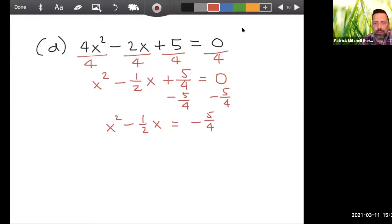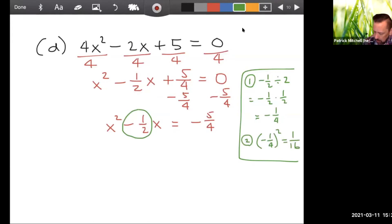So now we have x squared minus 1 half x equals negative 5 fourths. We are ready for the magic trick. The number attached to the x is a negative 1 half. Let's see. Step 1, negative 1 half divided by 2. Remember dividing by 2 is the same thing as multiplying by 1 half. So that would give us negative 1 fourth. And then what do we do in step 2? We square the answer to step 1. The magic number is 1 sixteenth.